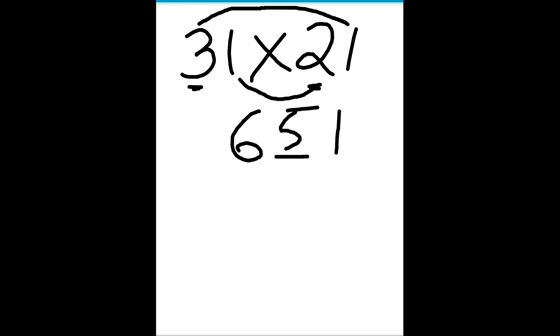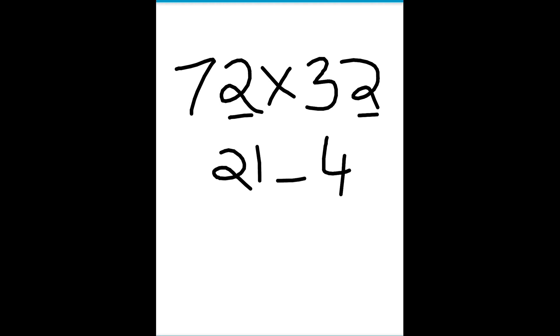It's pretty simple, right? Now we'll see a bit more complicated problem. Now we have 72 times 32, for example. So we'll go by the same method. 7 times 3 is 21, and we'll leave a blank. 2 times 2 is 4.